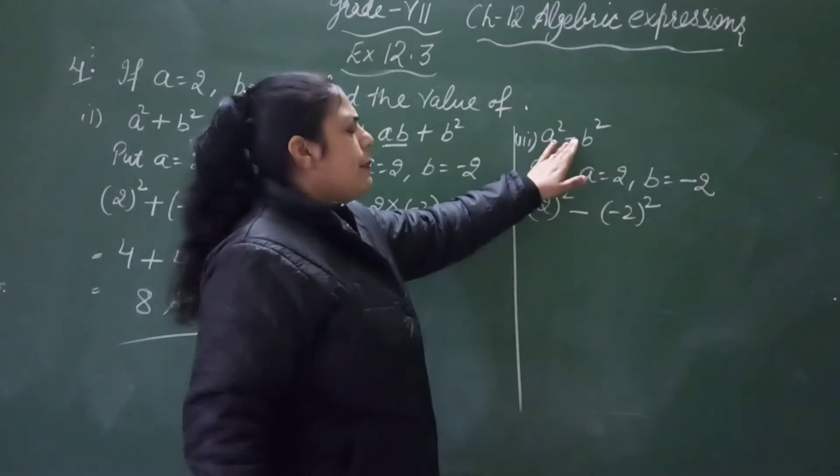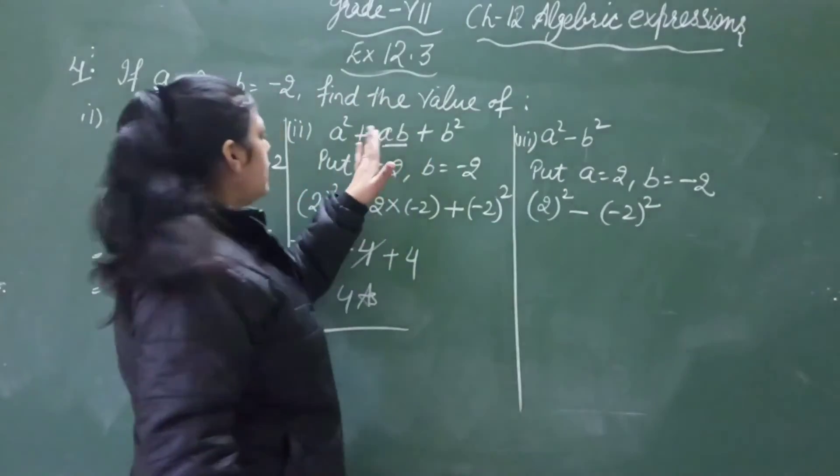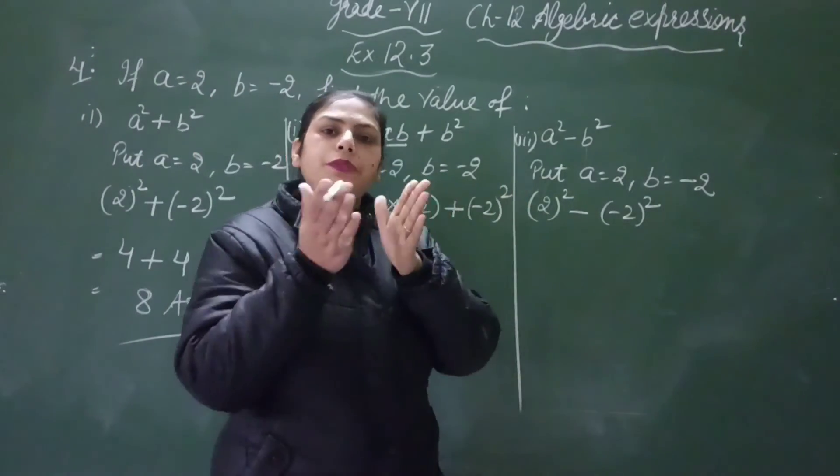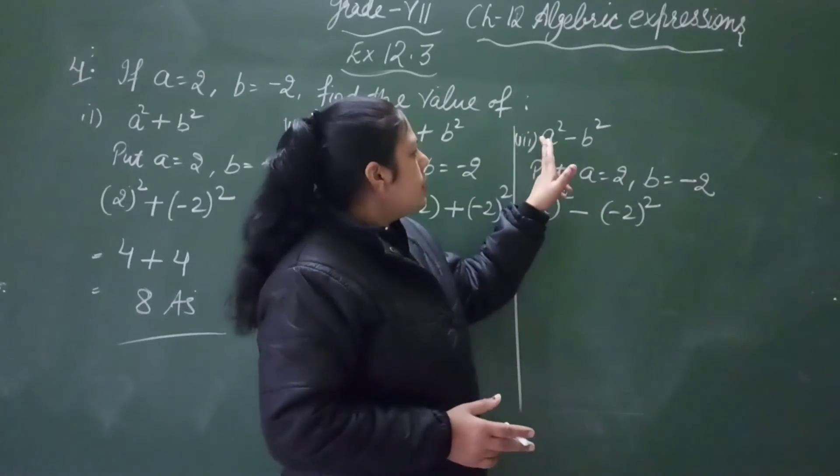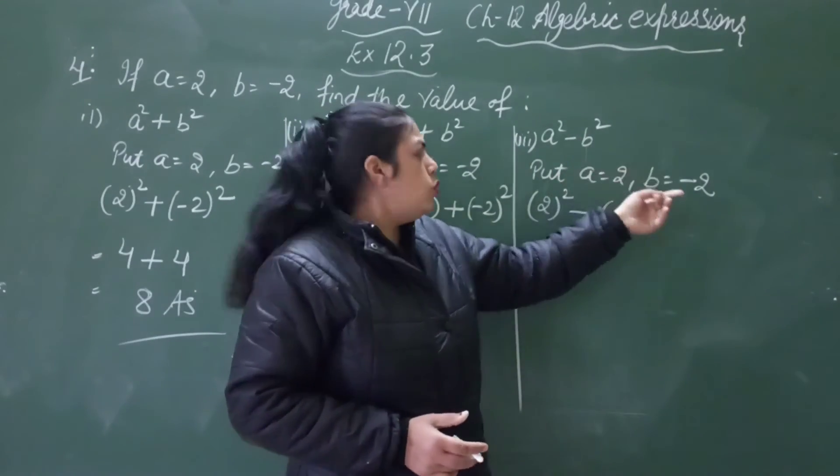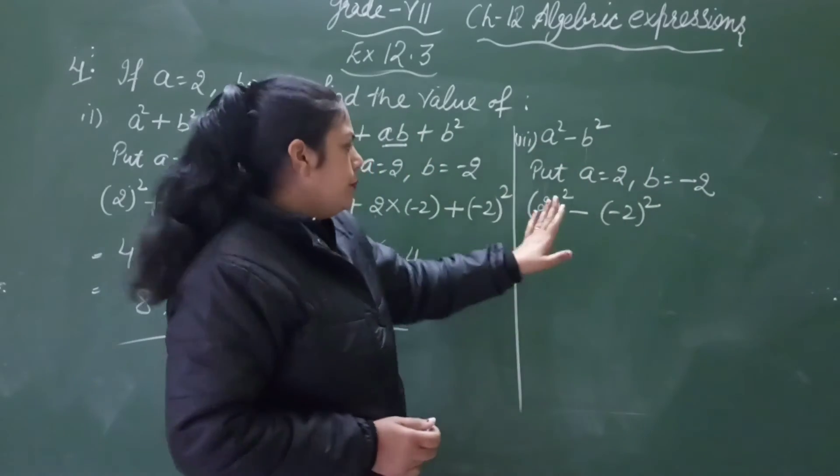Whatever symbols we have, minus or plus, we keep them. You don't change the sign. We only substitute the values. Where we have a, we put 2, and where we have b, we put minus 2. Clear?